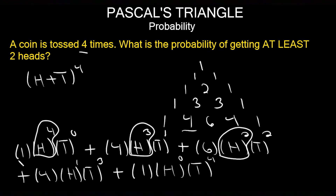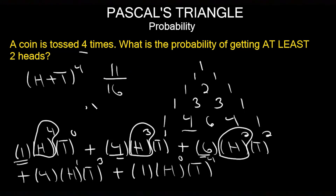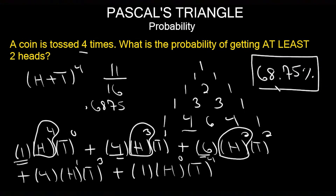Once you identify all your possibilities, look at the coefficients in front: I have 6, 4, and 1 — adding those up gives 11, which goes on the numerator. For the denominator, add up the entire row: 1 + 4 + 6 + 4 + 1 = 16. So the probability is 11/16 = 0.6875, or 68.75%. If you toss a coin four times, the probability of getting at least two heads is 68.75%.